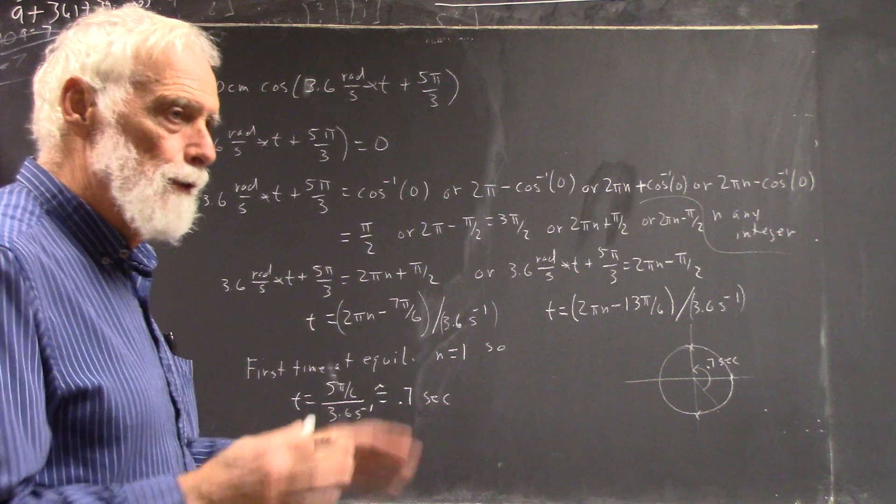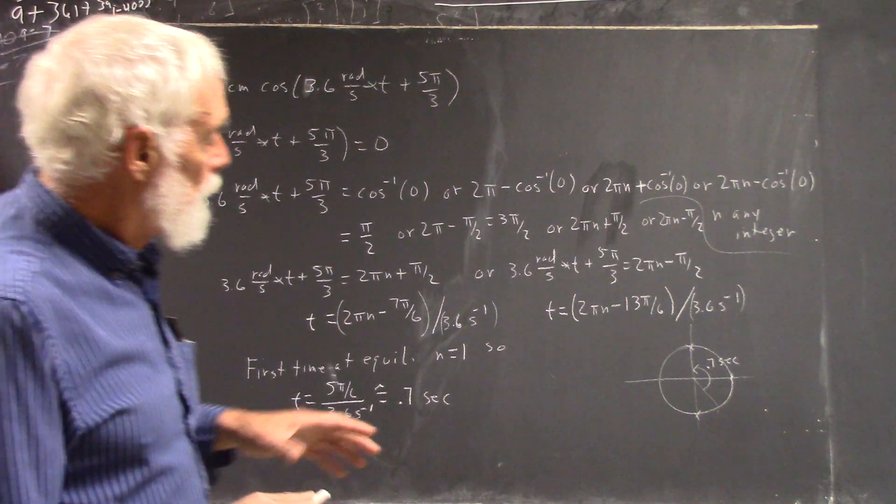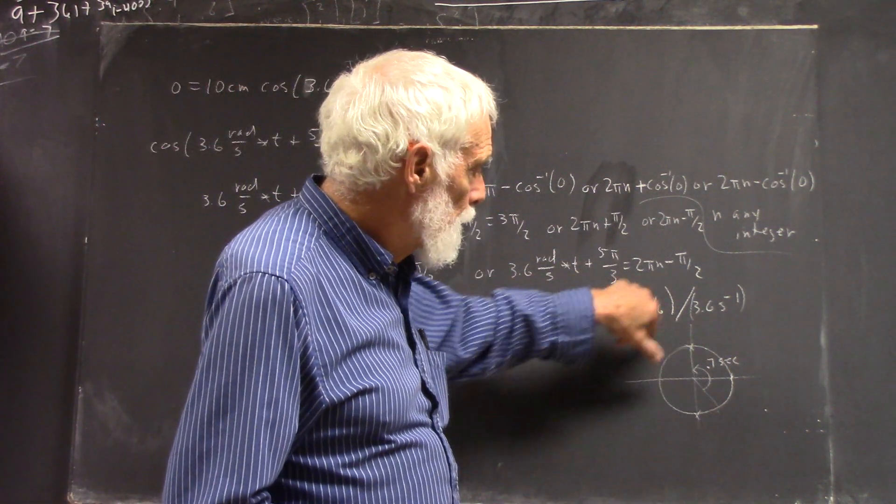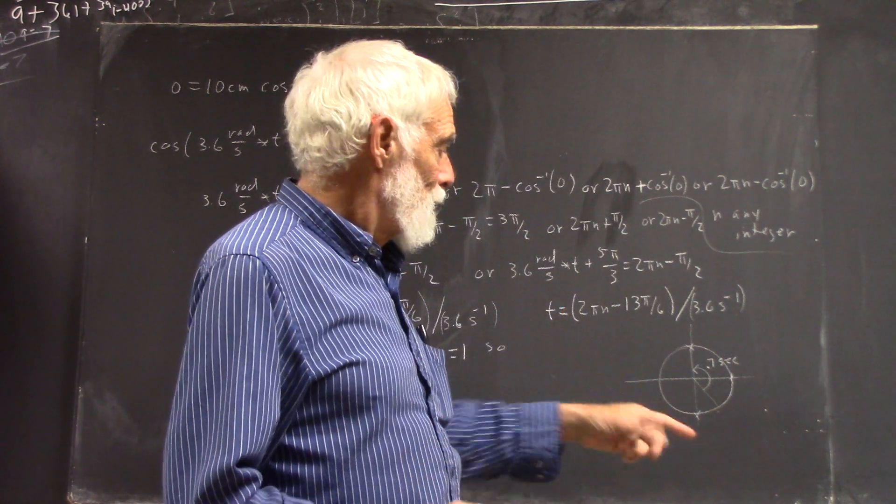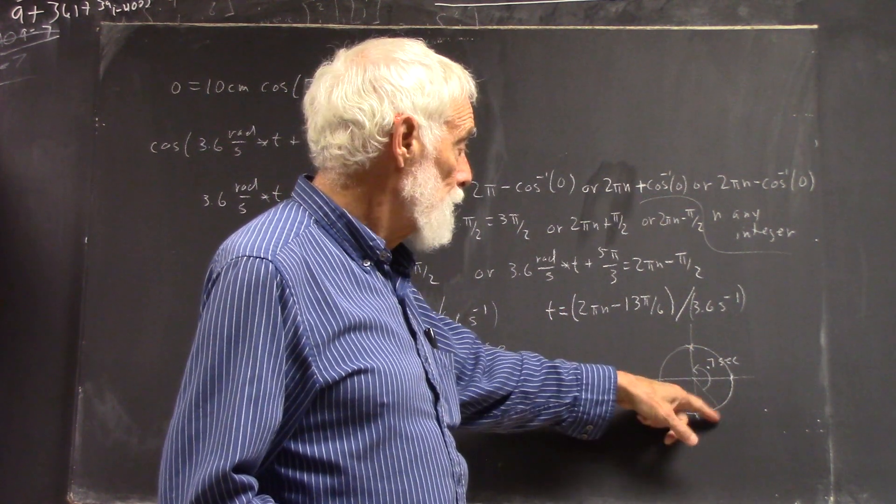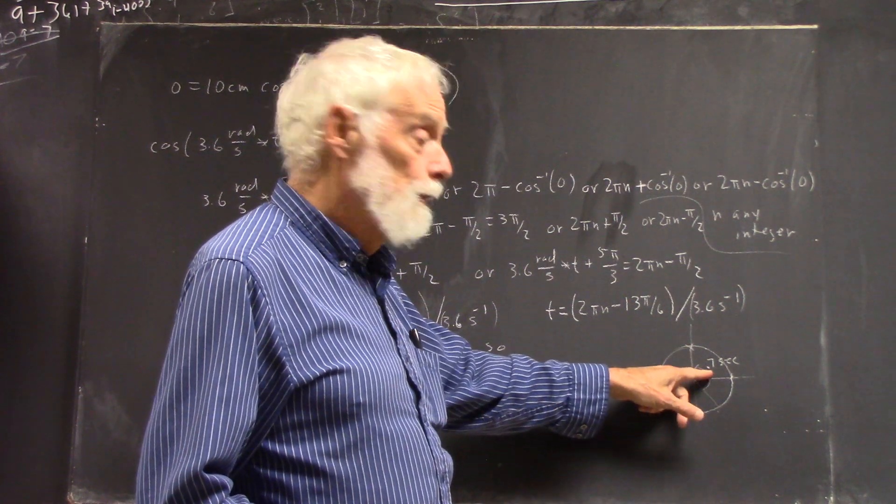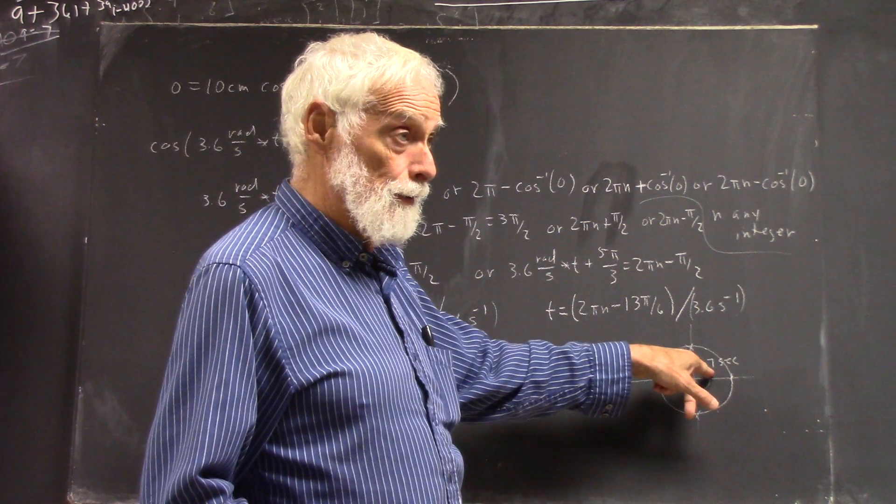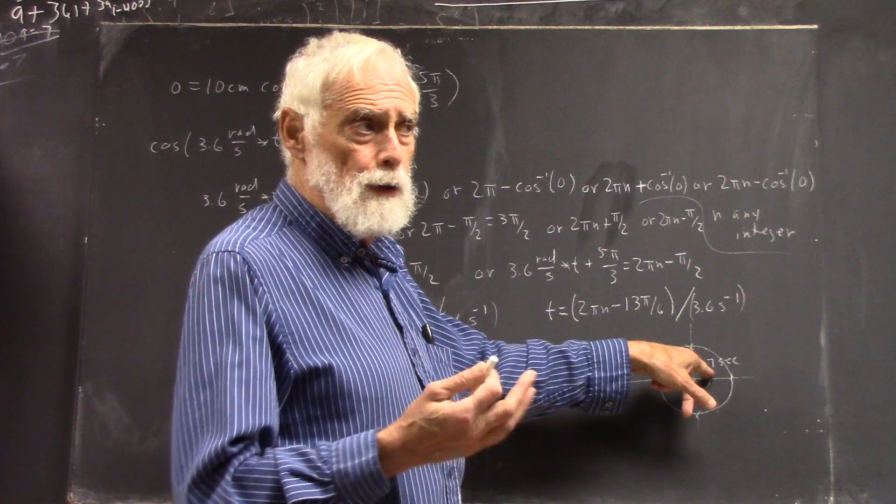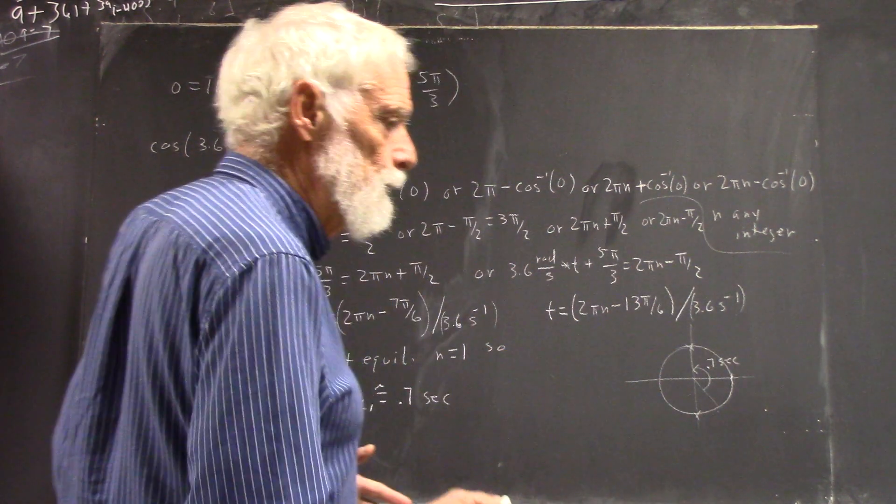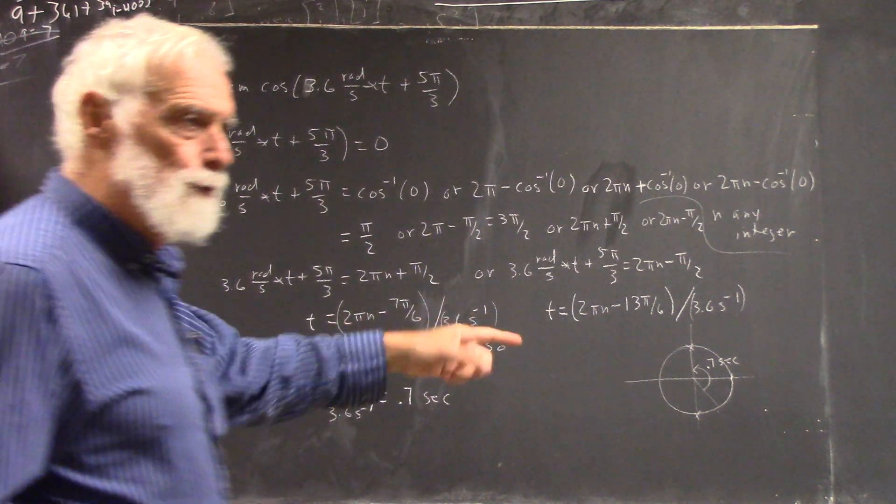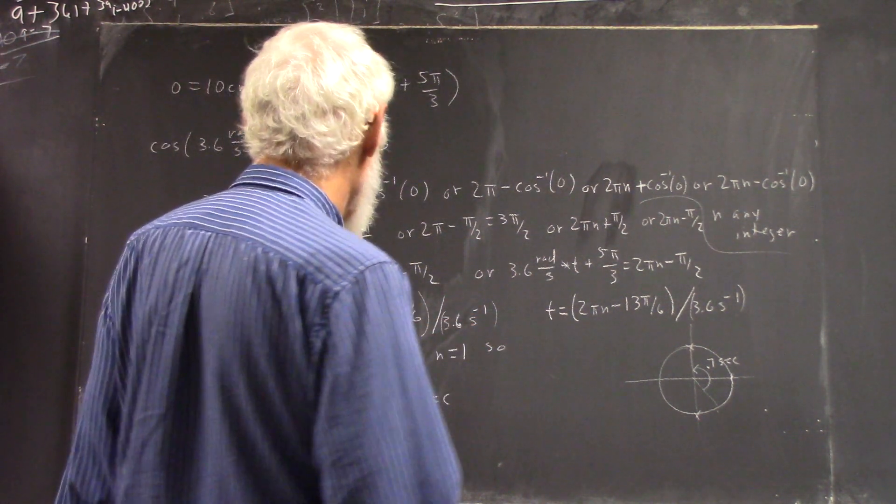Now, I said earlier, and you can work out the numbers, the period of this motion is around 2 seconds. So, it's making less than half a cycle here, so it's not unreasonable that you get 0.7 seconds. You always want to do that with a solution. You want to check it against other parts of the solution to make sure you have some kind of consistency. That's reasonable consistency.